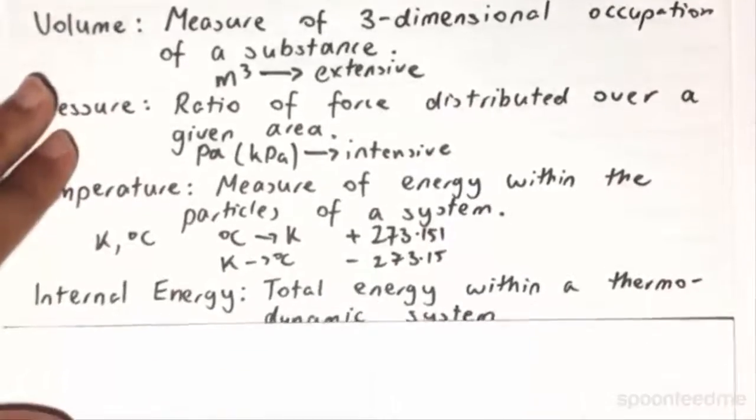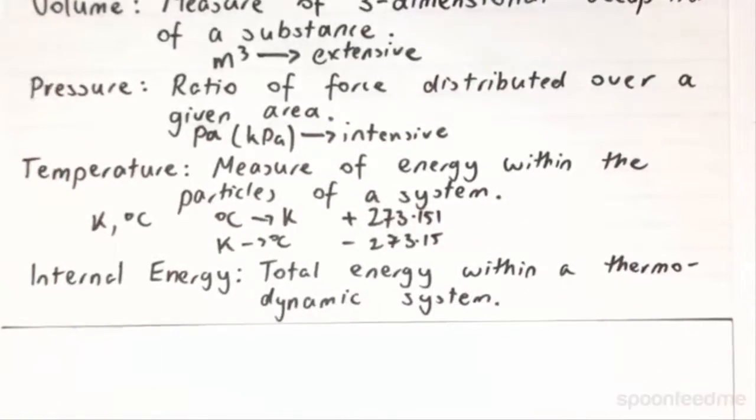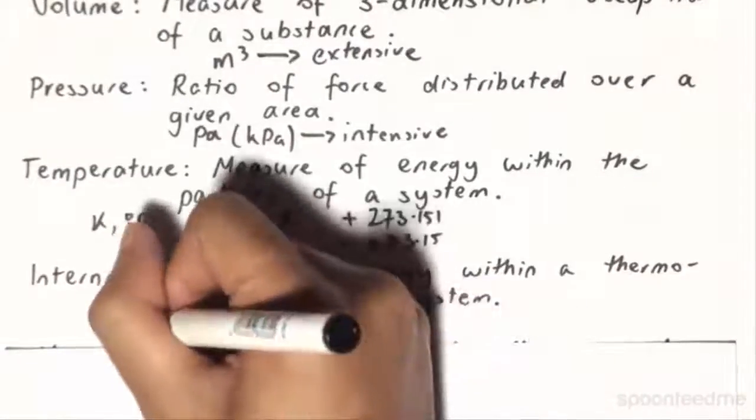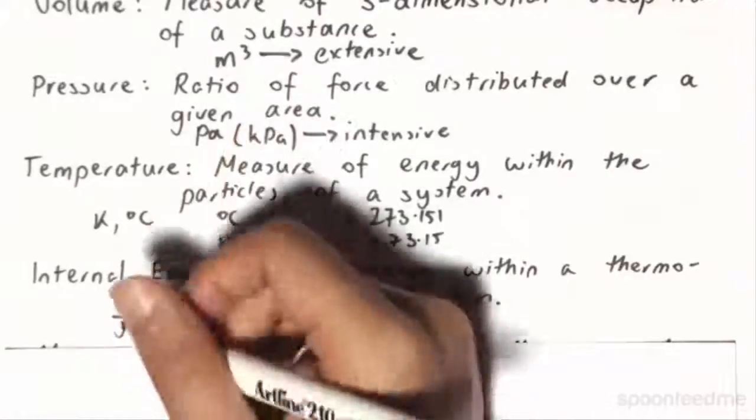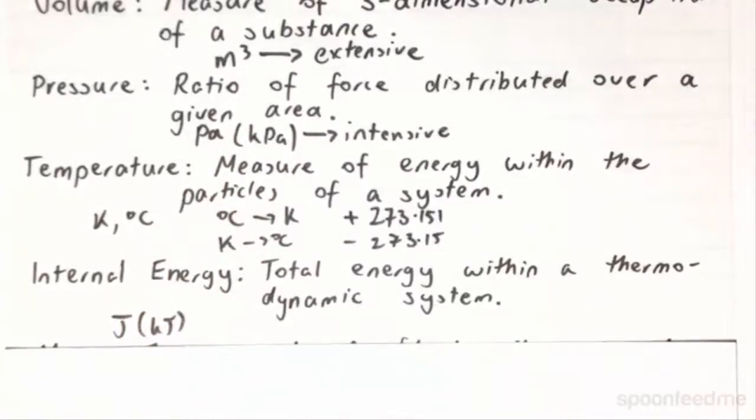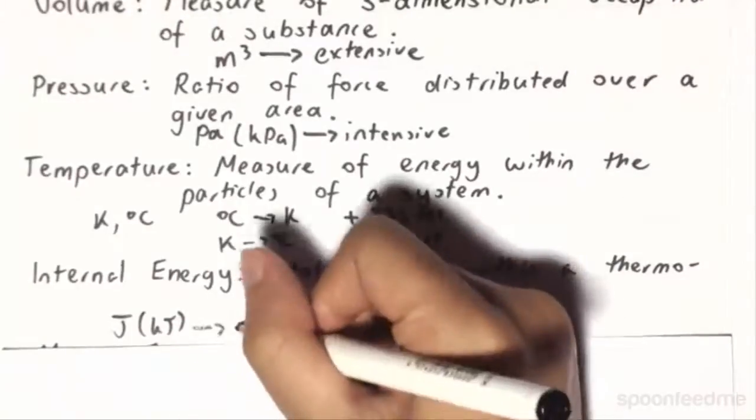Next, we have the internal energy, which is the total energy within a thermodynamic system. This is measured in joules for SI units. However, just like for the case in pressure, this is typically going to be in kilojoules, due to the large amounts of energy that we are going to be working with. This is going to be an extensive property.